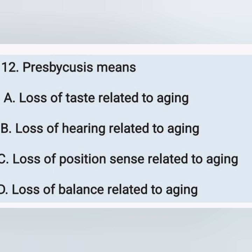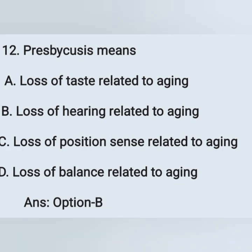Question number 12: presbycusis means — option A: loss of taste related to aging, option B: loss of hearing related to aging, option C: loss of position sense related to aging, option D: loss of balance related to aging. Presbycusis means loss of hearing related to aging — option B is the correct answer.